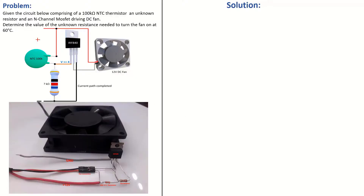Here we have our circuit and the problem statement. Consider yourself a technician or engineer working on a system who has been asked to set up a circuit that will turn this fan on at 60 degrees. Given the circuit below comprising a 100k NTC thermistor, an unknown resistor, and an N-channel MOSFET driving a DC fan — determine the value of the unknown resistance needed to turn the fan on at 60 degrees.